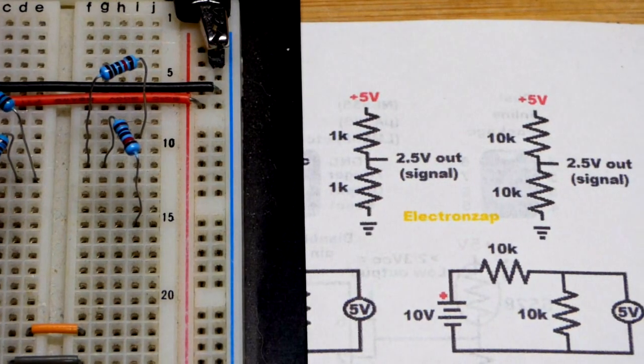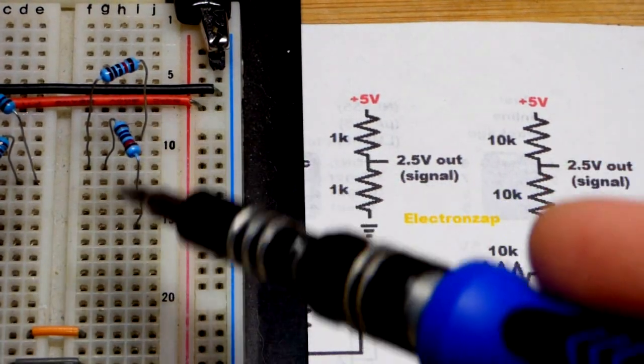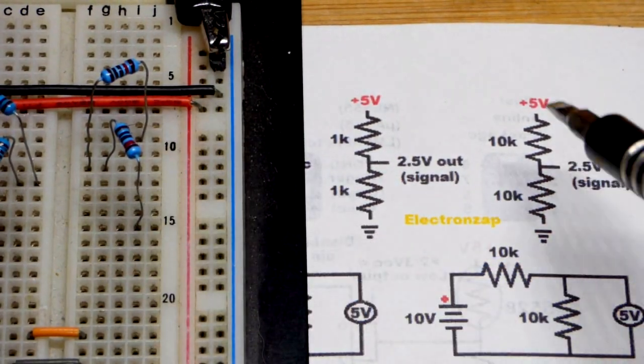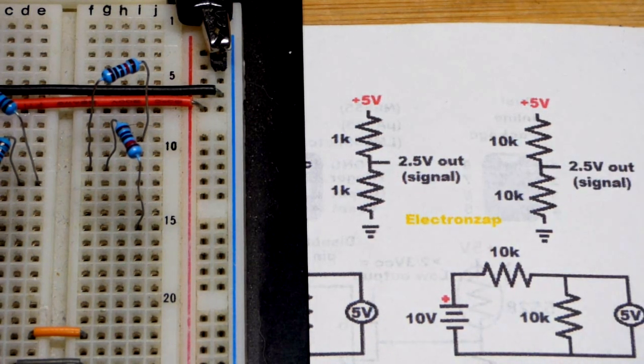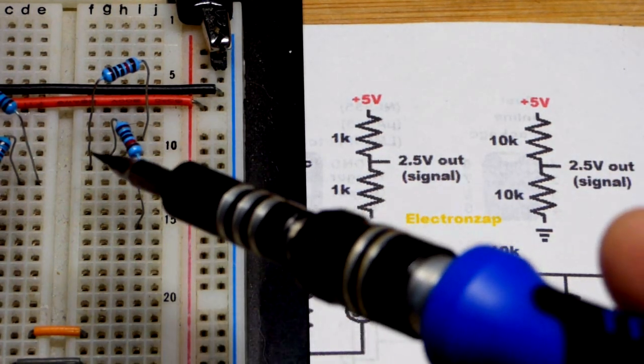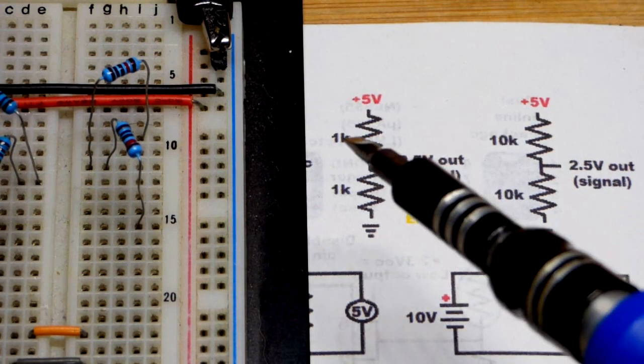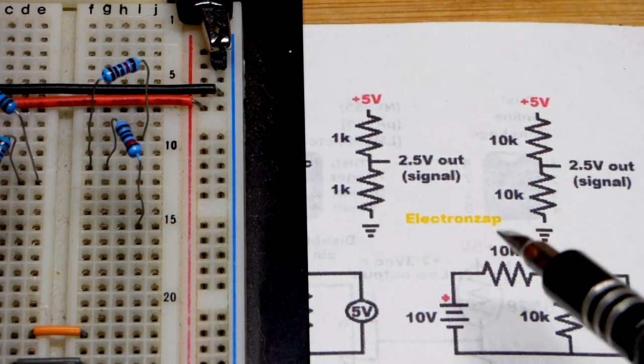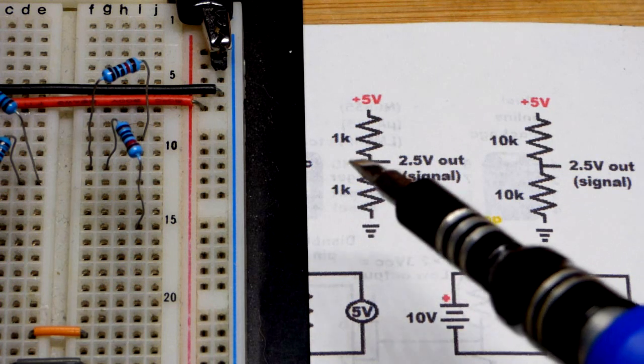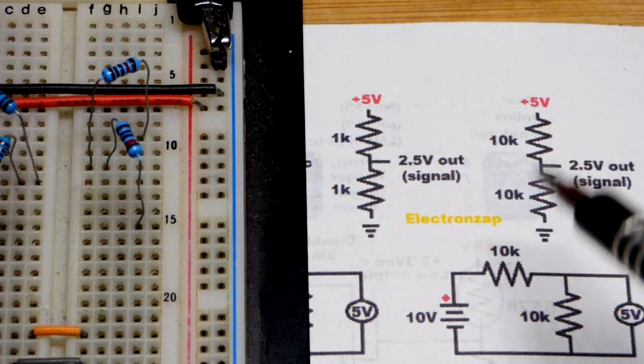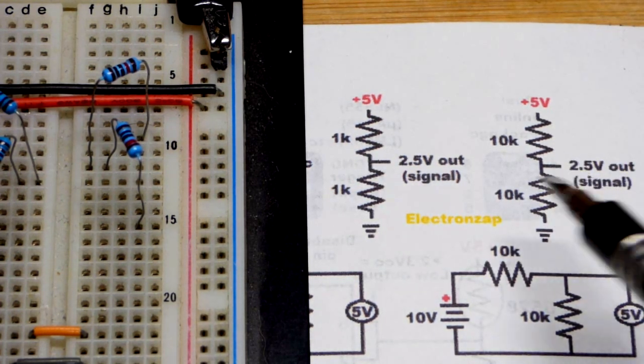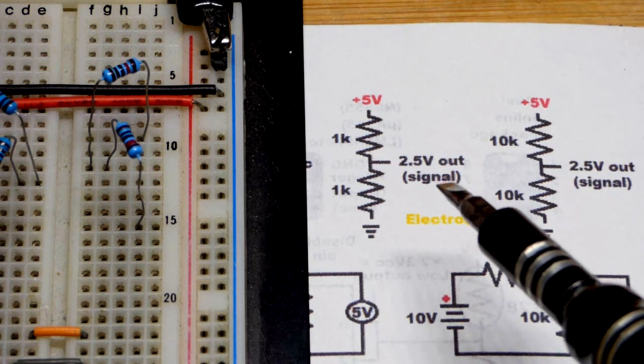Over here to the right we have 10,000 ohm resistors. Again they're equal value so you put 5 volts across them you're going to have 2.5 volts where they come together. So even though the resistances are different as a voltage divider since they're equal with each other within the voltage divider you're going to get half of the voltage out. Now these are signal voltages.